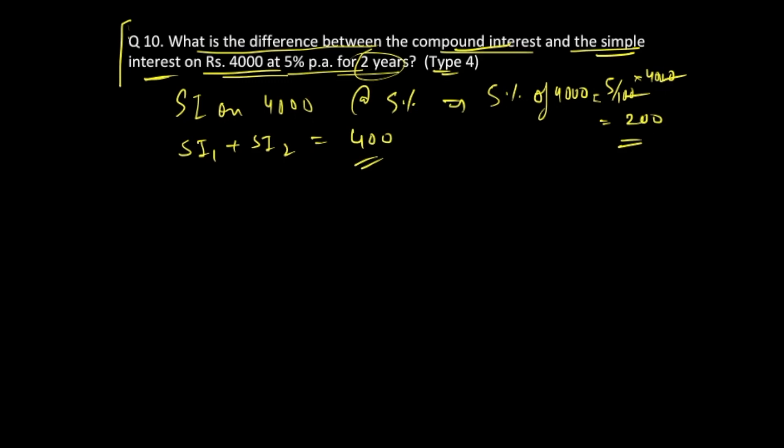Now for compound interest, we do the same thing: 4000 at 5% in the first year. The 5% of 4000 we've already calculated. We also know that for the first year, SI and CI are both the same, so this is going to be 200 rupees.